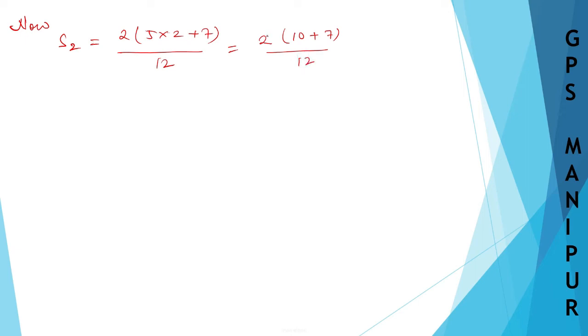Now, I can write down 2, 5 to 2, 10 plus 7 divided by 10, divided by 12. I can cancel 2, 6 to 12. So, it is 6 down here. 10 plus 7, it is 17 divided by 6. I got S2 as 17 divided by 6.